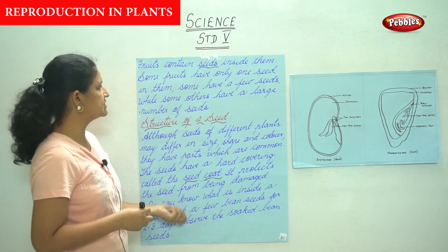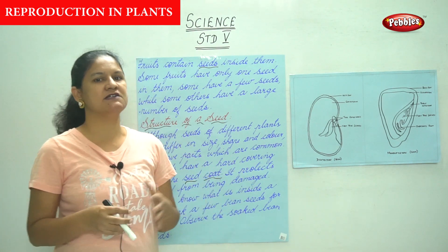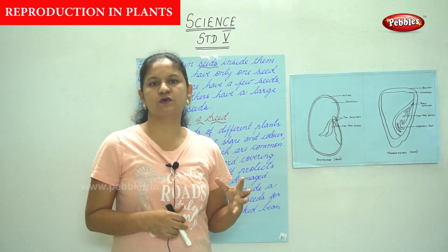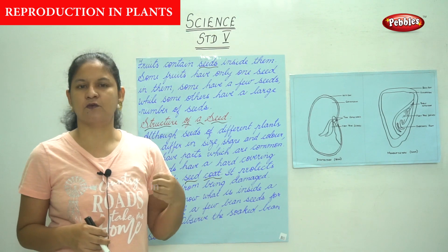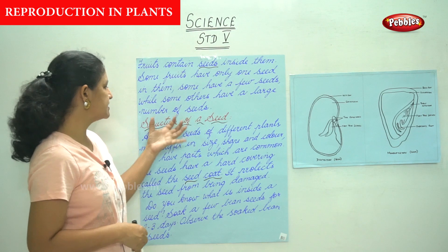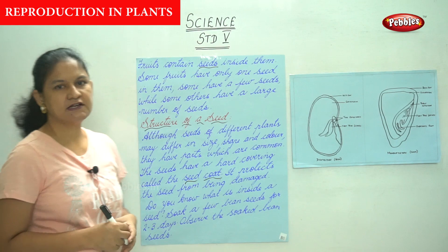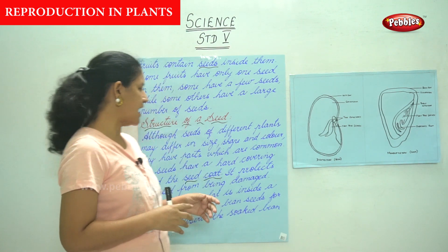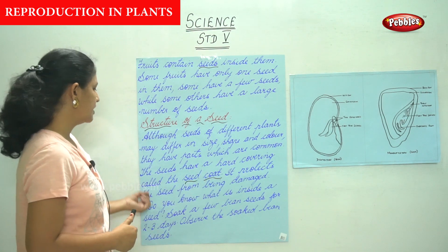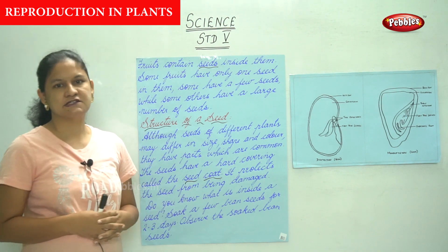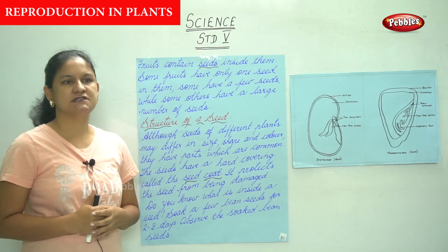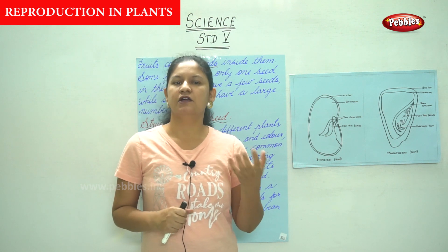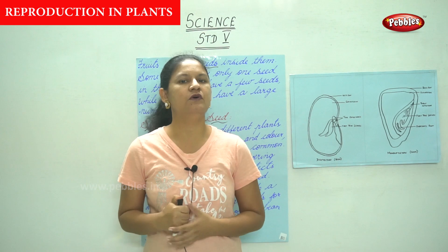So to recap: many plants bear flowers, these flowers grow into fruits, and the fruits contain seeds. Some fruits have one seed, some have a few, and some have a huge number. Seeds of different plants differ in size, shape, and color, but they have common parts, including a hard outer covering called the seed coat that protects them. Now we are doing a small experiment: soaking bean seeds in water for two to three days.